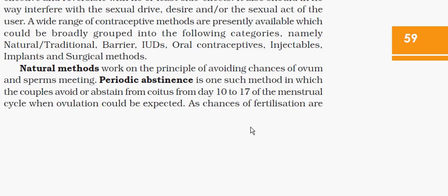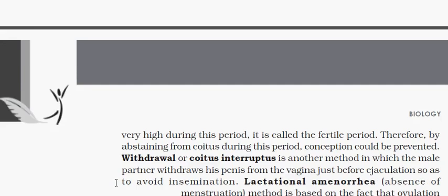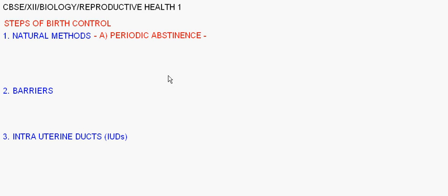At the time when chances of fertilization are higher, couples avoid or abstain from coitus — that is, from day ten to seventeen of the menstrual cycle when ovulation can be expected.